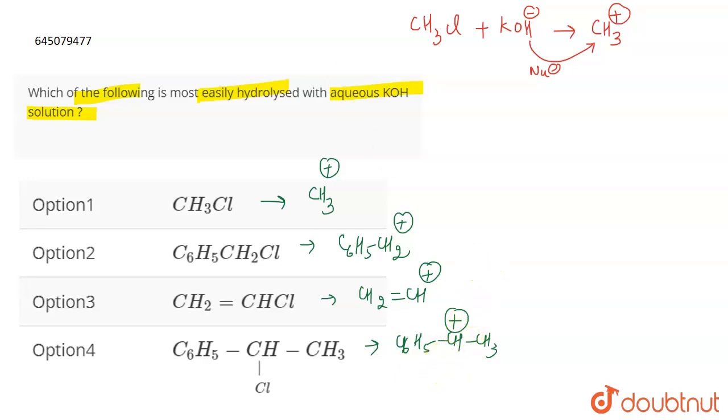More stable is the carbocation, more easily it will be hydrolyzed. More easily the nucleophilic attack is going to take place. So if you talk about the first one, this is just a methyl carbocation. But if you talk about the second one, basically what you should know is that what factors affect the stability of the carbocation.